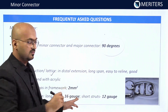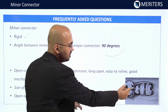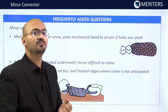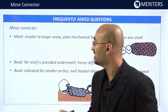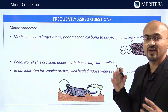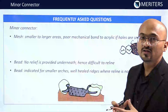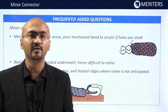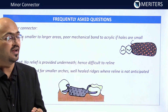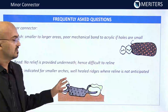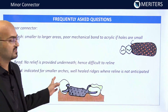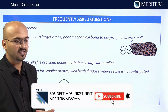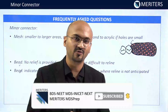The disadvantage of mesh minor connectors is that the smaller holes make it difficult for acrylic to bond, so mesh is indicated for smaller edentulous areas. Bead or nail head construction should be limited to well-healed ridges where relining is not anticipated, because no relief is provided between the metal and tissue. These are the key questions that can come from the minor connector topic.